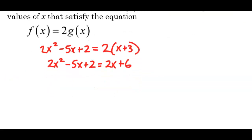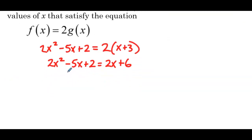Now we have a quadratic equation. In order to solve, we need it equal to 0, so we'll have 2x squared. We'll subtract 2x from both sides, so minus 7x. And we'll subtract 6 from both sides, so minus 4 equals 0.